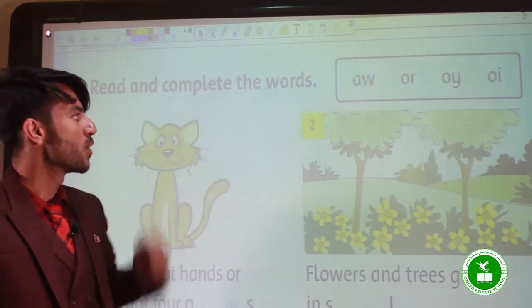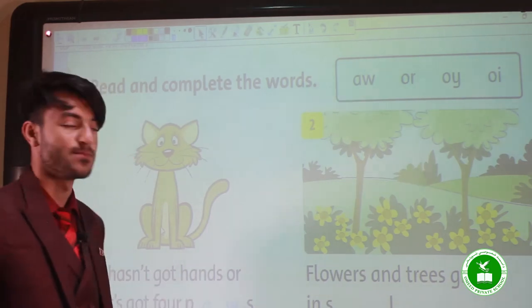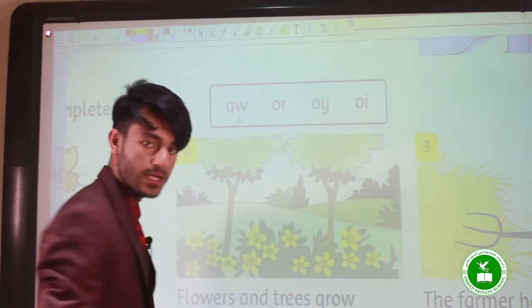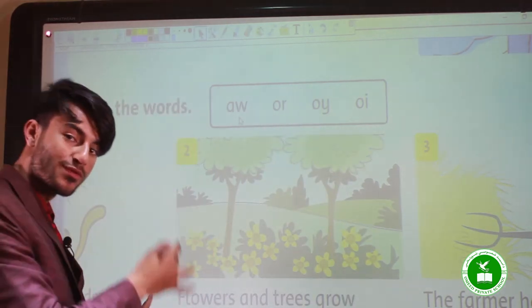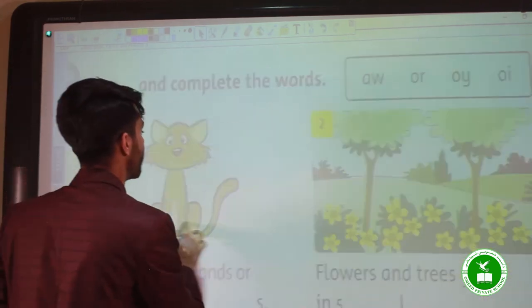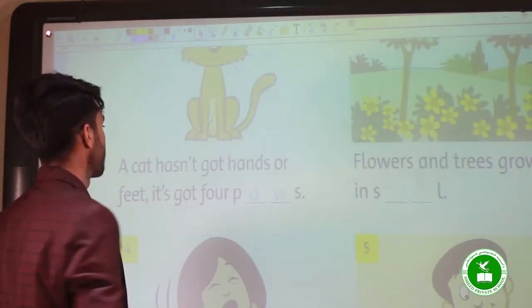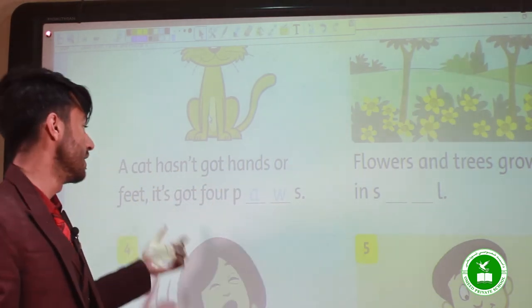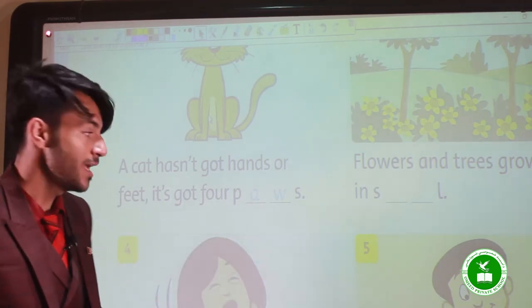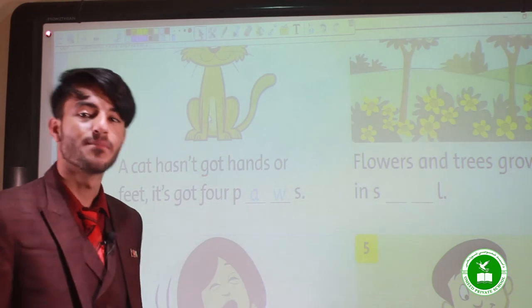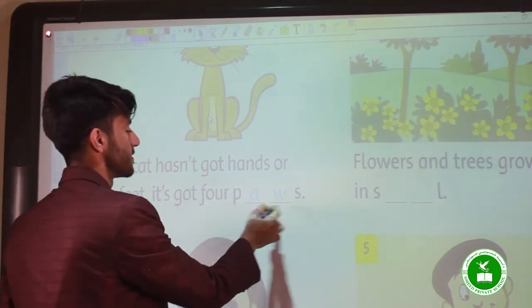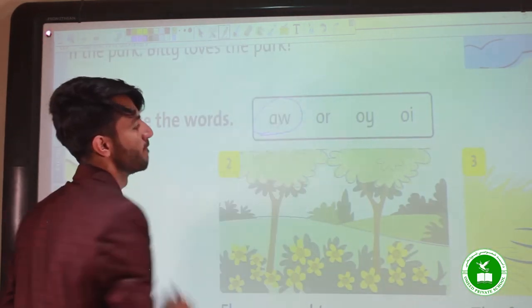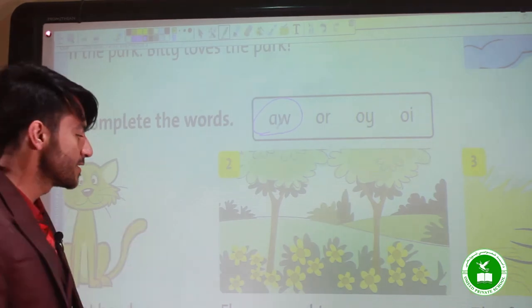Read and complete the words. We have a question: What are you doing? For example, the first one: A cat hasn't got hands or feet. It's got four paws. Very good. Let's go to the second one.